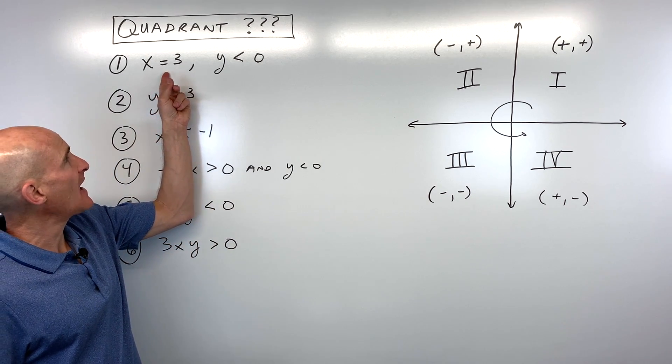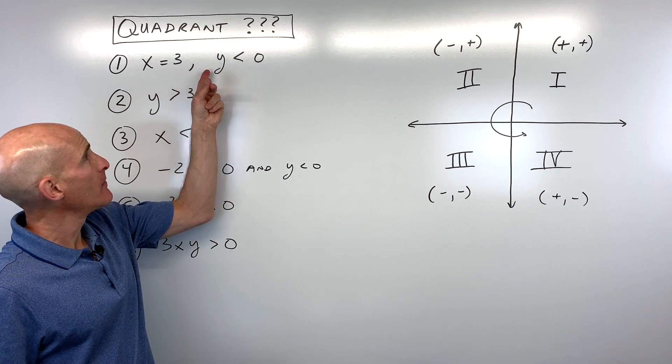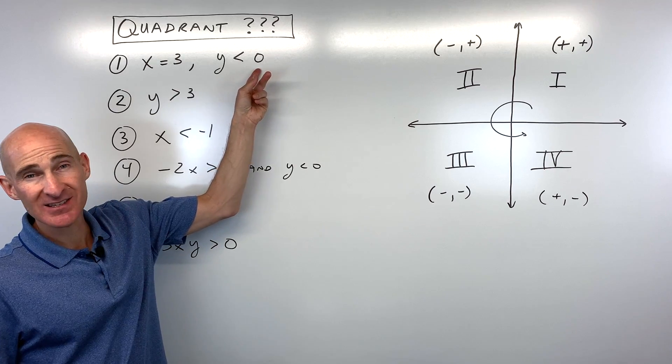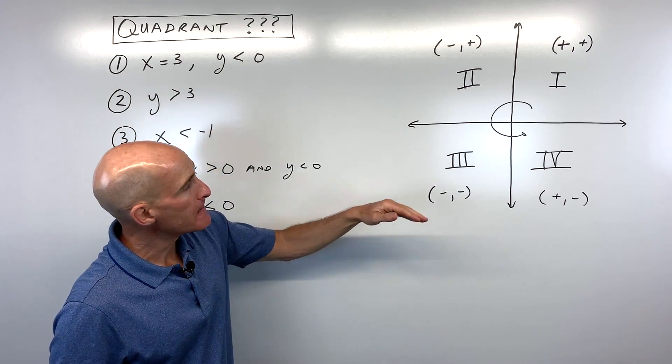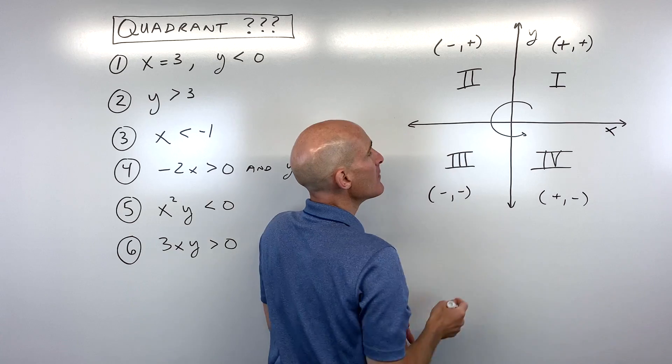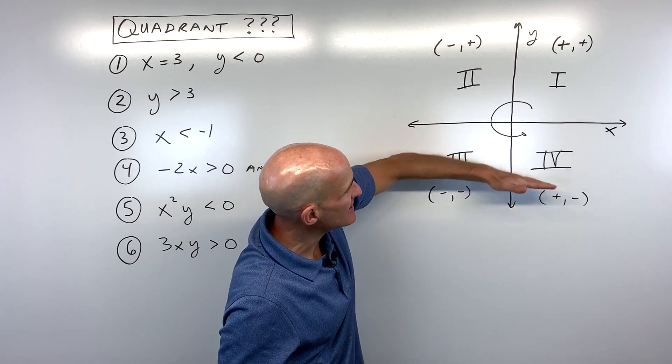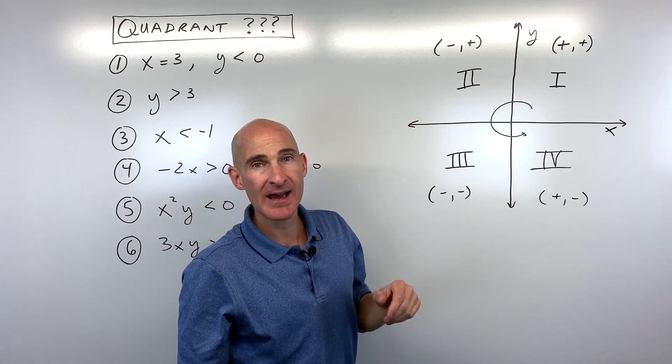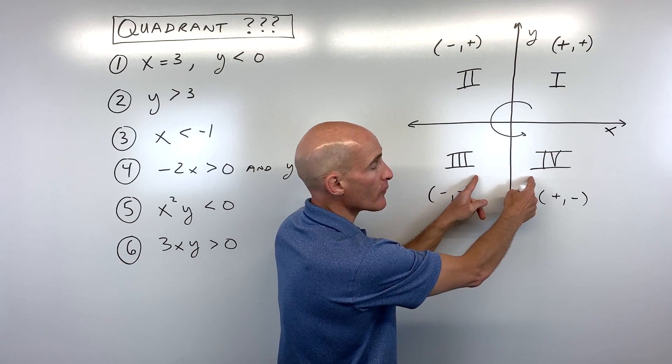So the first one, it says x is equal to three, but the y value is less than zero. So when we think of the x and y coordinates, when the y value is less than zero, that means it's going to be below the x-axis. That means we have to be in the third or fourth quadrant.